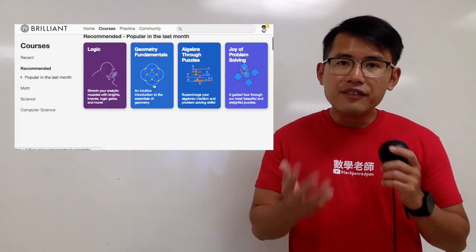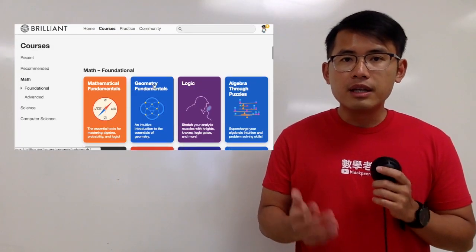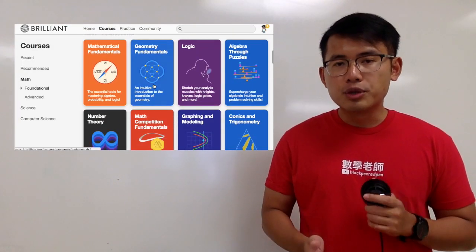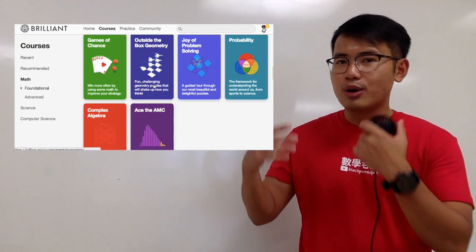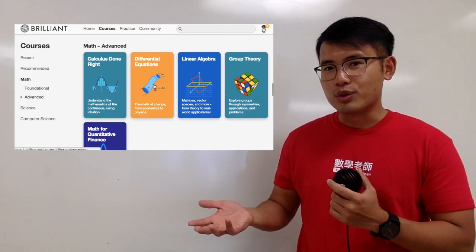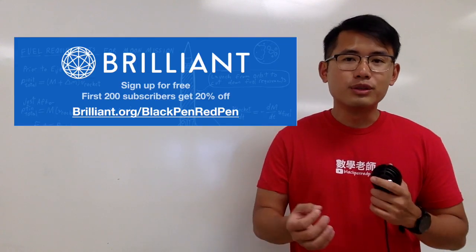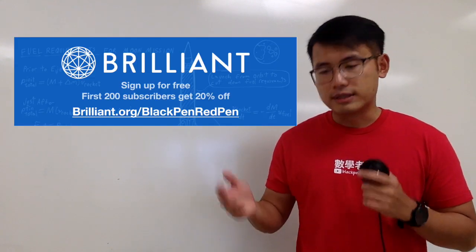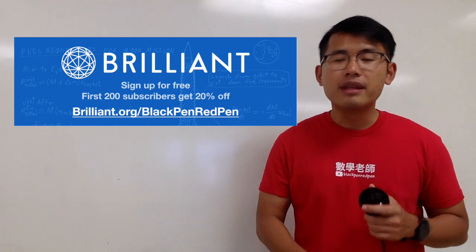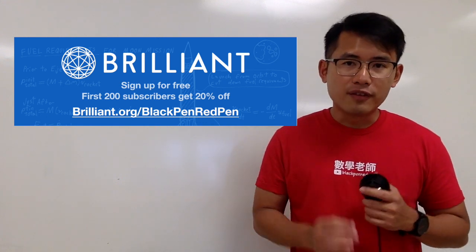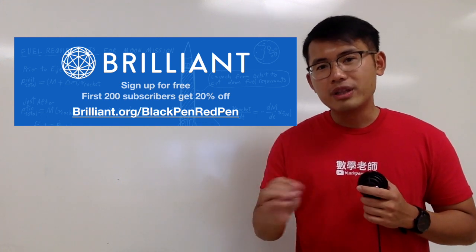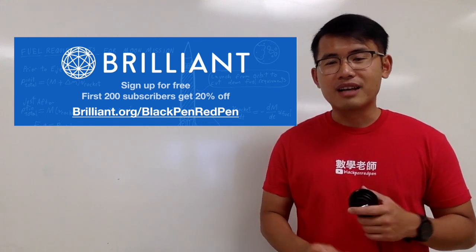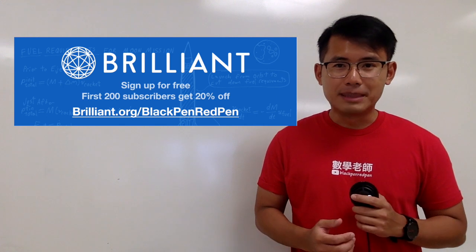Just sign up for their account. And if you are interested in getting their annual premium subscription, which allows you to get access to all of their interesting courses, you can use the link brilliant.org/blackpenredpen. And if you are one of the first 200 people to sign up, you will get a 20% off discount for the annual premium subscription.